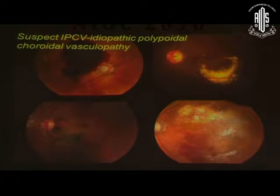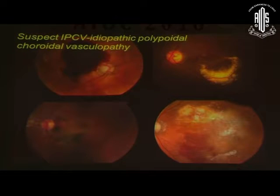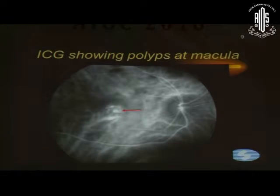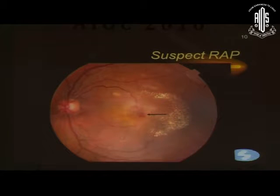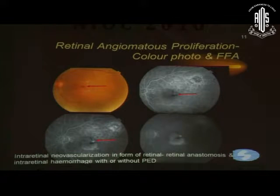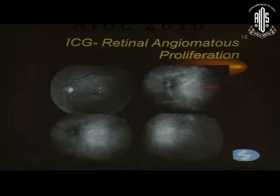In a situation like this, with a large hemorrhage or an exudative reaction, we suspect polypoidal choroidal vasculopathy, and ICG here classically shows polyps at the foveal area. Here again, with an exudative reaction, we see a localized hemorrhage and some abnormality of the blood vessels, and we would suspect a RAP lesion - retinal angiomatous proliferation - which we see in the color photo and the hot spot, subsequently confirmed by ICG.